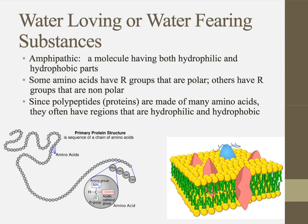Some substances have both hydrophilic and hydrophobic parts, and those are called amphipathic. I remember this by thinking about amphibians — 'amphi' means both. Amphibians spend part of their life in the water and part of their life cycle on land, so they are in both aquatic and terrestrial environments. Amphipathic molecules are molecules that similarly have both hydrophilic and hydrophobic parts.